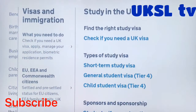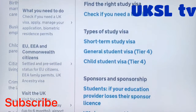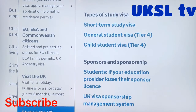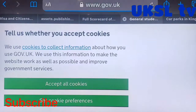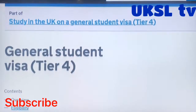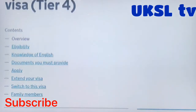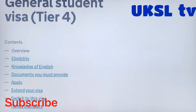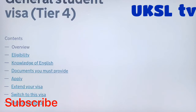Select 'Study in the UK or sponsor a student.' You can see the types of study visa. You have to select 'General Student Visa, Tier 4.' It has all the details you must know.